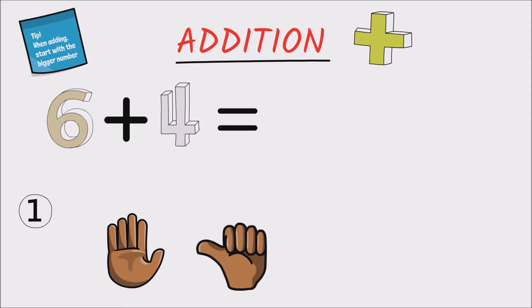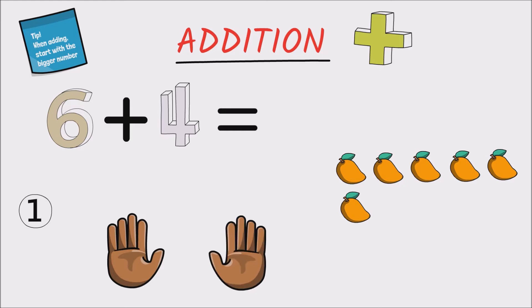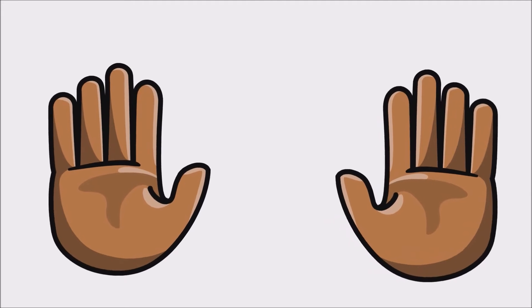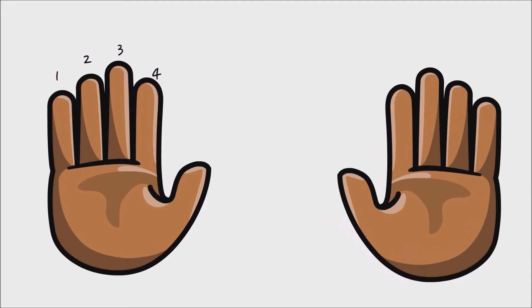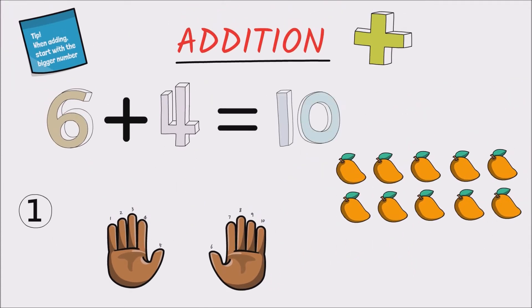Then we add four more fingers for the four mangoes she found when she got home, and then we count all the fingers that are up. So by counting we have one, two, three, four, five, six, seven, eight, nine, ten. So the answer is ten.